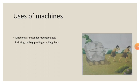Machines are used for moving objects by lifting, pulling, pushing or rolling them. In this picture, the two persons are moving an object through pushing or rolling. In this picture, the woods are present under the object. So these woods help the object to roll them. It shows that machines help to move objects from one place to another place by lifting, pulling, pushing or rolling them.